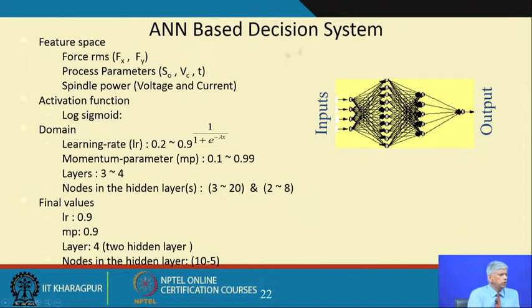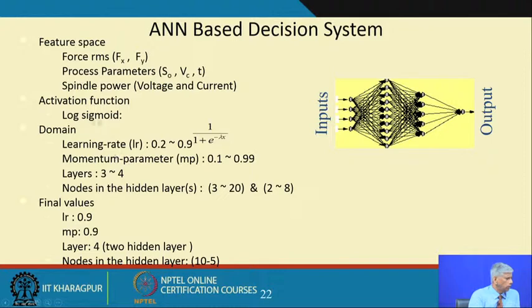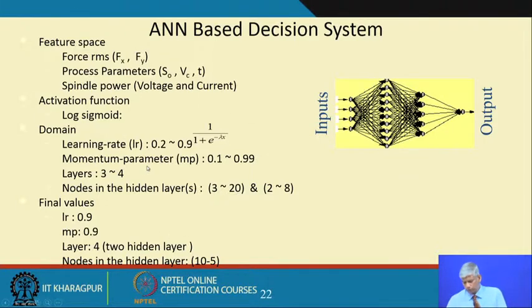This is the artificial neural network based diagnostic system we used. The parameters were the forces, process parameters — speed, depth of cut, machining time — and spindle power. A log-sigmoid delta activation function was used in the ANN model, with about 3 to 4 layers and several nodes in the hidden layers. We played around with all of these; a couple of students got their master's degrees out of it, and one of them received an award for this work.